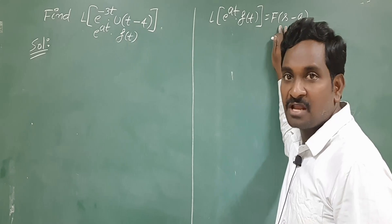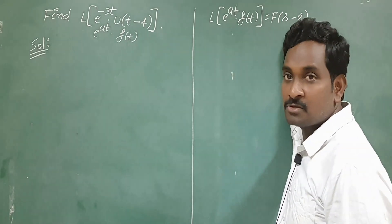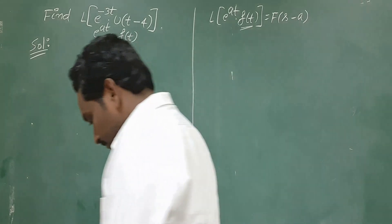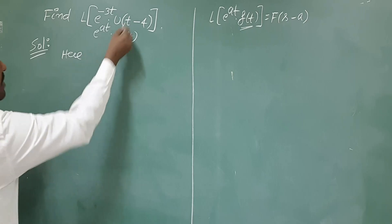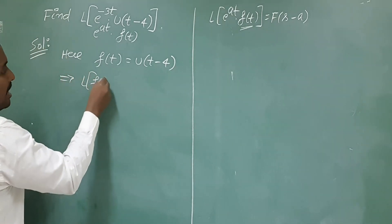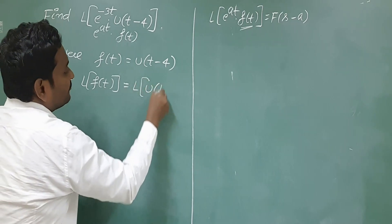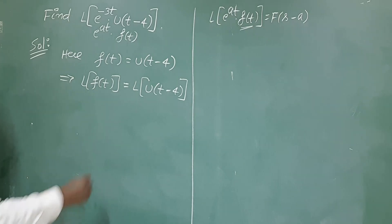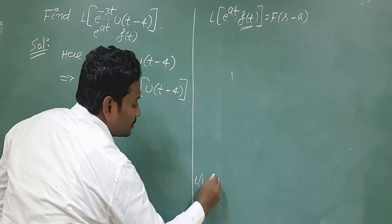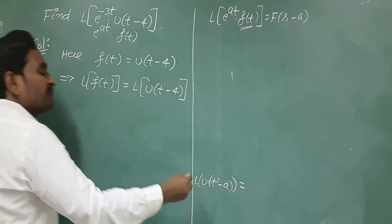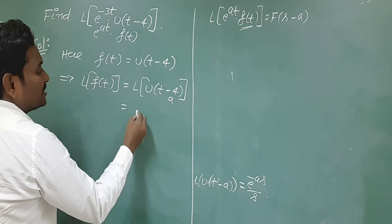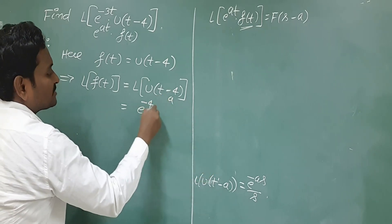First, find F(s). Here f(t) = u(t - 4), so L{f(t)} = L{u(t - 4)}. Using the formula L{u(t - a)} = e^(-as) / s with a = 4, we get F(s) = e^(-4s) / s. Now comparing the given problem e^(-3t) · u(t - 4) with the first shifting theorem, a = -3. So replace s with s + 3 in F(s): the result is e^(-4(s+3)) / (s+3).